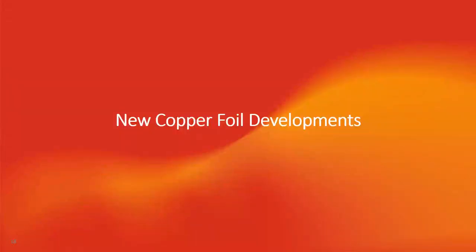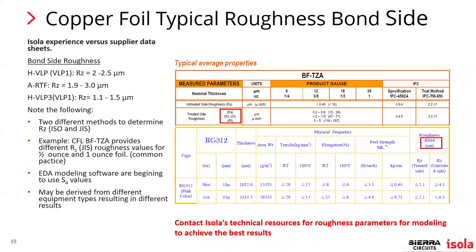Moving to new copper foil developments — this is where things are really changing over the last several years. Typical roughness on the bond side, or drum side, is the side we put against our laminate. The data sheet alone doesn't describe precisely the numbers needed for modeling. There are good papers out there — one from Bert Sminovich regarding copper foil roughness and how to model it. HVLP or VLP1 has a bond side roughness of 2 to 2.5 RZ. ARTF — the advanced version of RTF where the drum side is much smoother — relates back to that drum polishing process mentioned earlier.